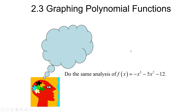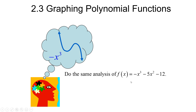Do the same analysis of f of x equals negative x to the third minus 5x squared minus 12. This is a cubic trinomial whose leading coefficient is negative one. If the leading coefficient is negative, think about what that does to the graph. A negative sign on the leading term causes a reflection, so it flips the typical cubic shape — picturing it starting in quadrant 2 rather than quadrant 3.